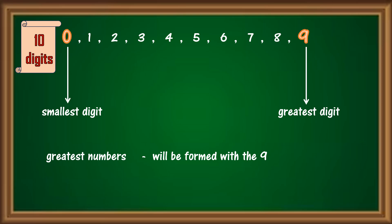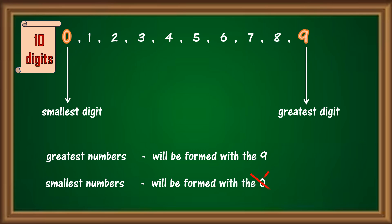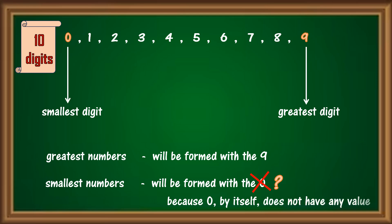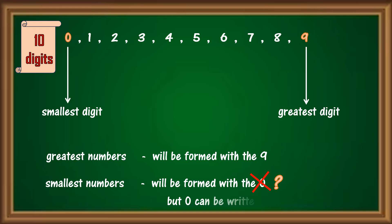And in order to form the smallest numbers, will you use the smallest digit 0? No. Why? Because 0 by itself does not have any value. It is not a counting number. But 0 can be written after any other digit.